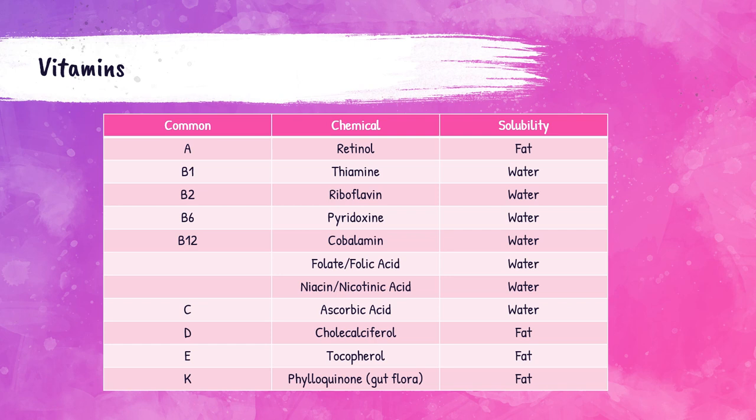There's really not an easy way to remember this chart other than rote memorization. However, in terms of solubility, I recommend that you just remember that the fat-soluble vitamins are vitamin A, D, E, and K. And if it's not one of those vitamins, you know that it is water-soluble. So definitely know everything on this chart, and we're going to be discussing these in detail in the coming slides.